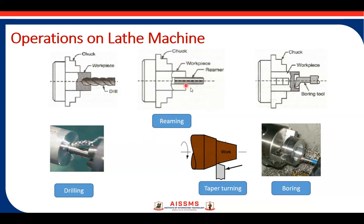Reaming operation is used for finishing the circular hole inside the workpiece. Taper turning operation produces a taper along the workpiece length, requiring feed given both parallel and perpendicular to the axis. Boring operation is used to enlarge a previously drilled hole; the boring tool is mounted on the tailstock, and the previously drilled hole is enlarged.